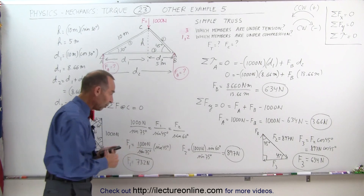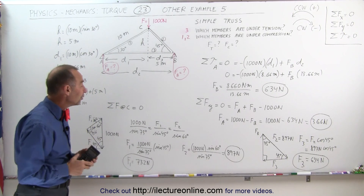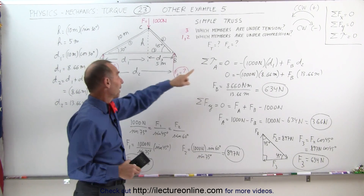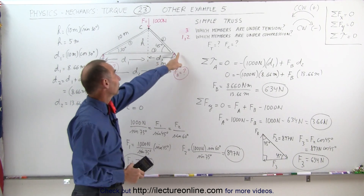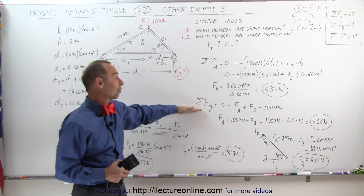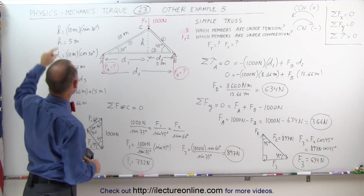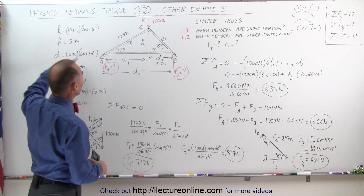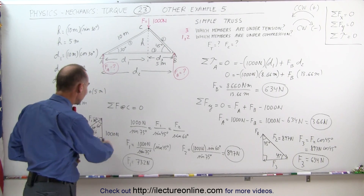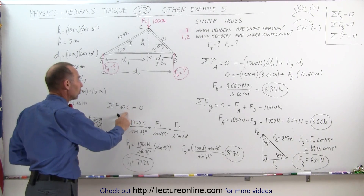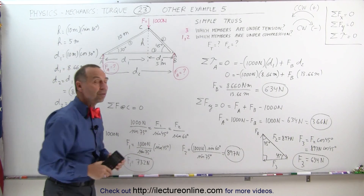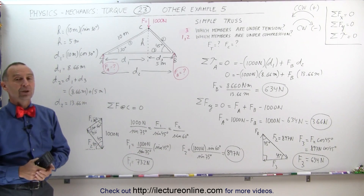Now we have everything we need to know about the truss. First, using the sum of torques about any point, we found the force at B, then used the sum of y-direction forces to find the force at A. Next, we found the dimensions of the truss in the x and y directions. Finally, we summed forces vectorially at joint C and joint B to find the individual member forces. That's how we deal with trusses.